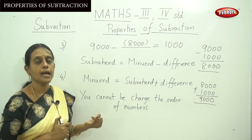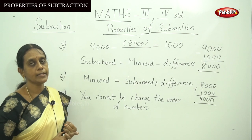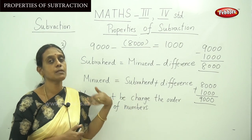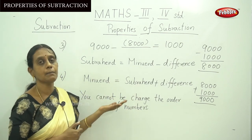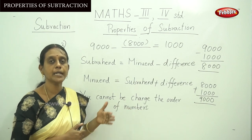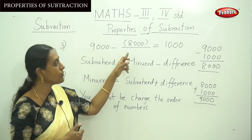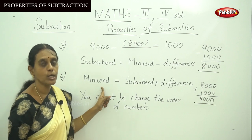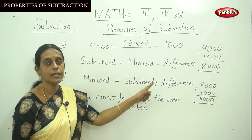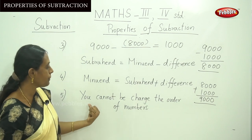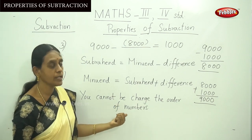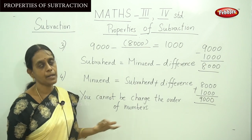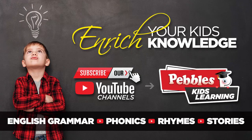These are the five properties of subtraction. First: subtracting the same number gives 0. Second: subtracting 1 gives the predecessor. Third: you can find the subtrahend by subtracting the difference from the minuend. Fourth: you can find the minuend by adding the subtrahend and the difference. Fifth: you cannot change the order of numbers in subtraction. Thank you.